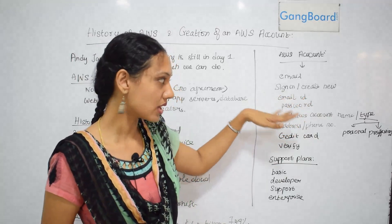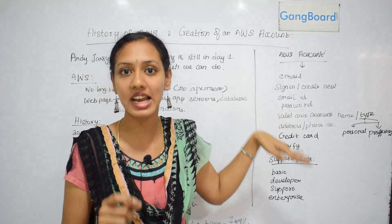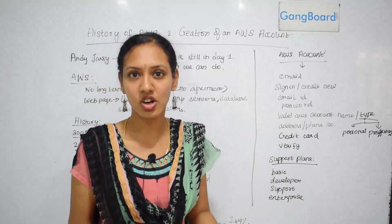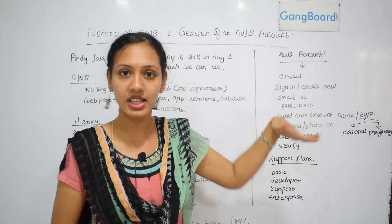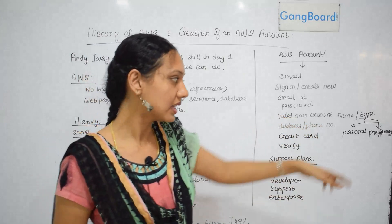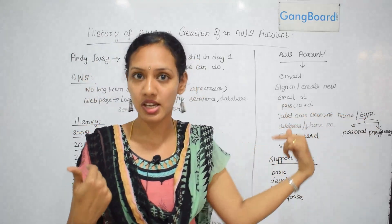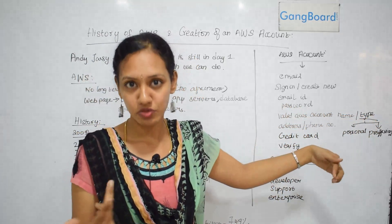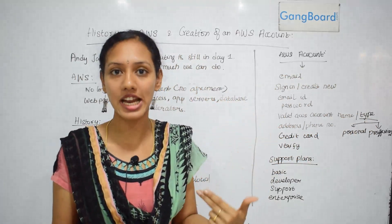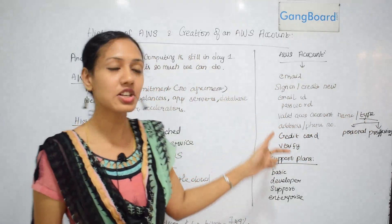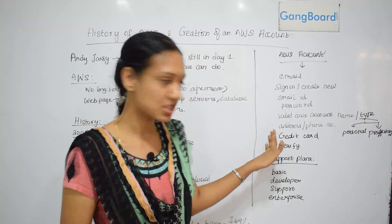Then enter a password. It will then ask you to enter a valid AWS account name — you can give any name, for example 'Besant Technologies.' Next, it will ask you to choose your account type: personal or professional. Since we are using it for study purposes, choose personal. The next page will ask for your address, phone number, and credit card details. For one year it's free, and after one year you will be charged.